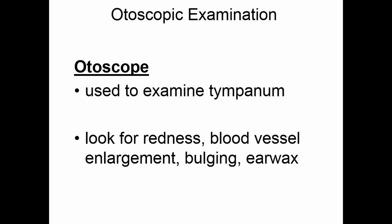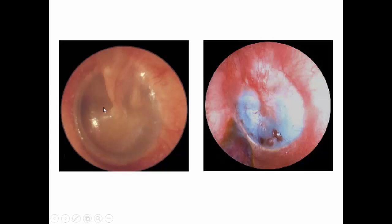To look at the eardrum, you can use an otoscope. As you use the otoscope, you can look in the external auditory canal for ear wax and look at the tympanum for redness, blood vessel enlargement, or a bulging of the tympanum. Here you see a normal tympanum and these are the little ear ossicles you can see through there — it's faintly pink. Over here you have one with an ear infection behind it. Notice how the blood vessels are enlarged and how we have a bulging eardrum; the fluid is pushing the eardrum out.